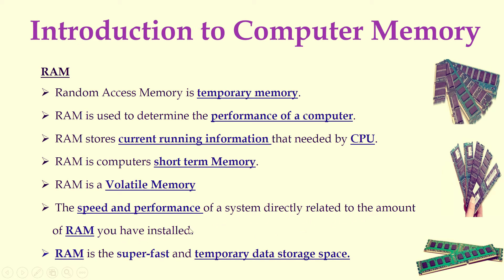The speed and performance of a system is directly related to the amount of RAM installed. If you have higher capacity RAM, the speed will be increased. In general, primary memory has high speed but less capacity. Secondary memory has large capacity but very slow speed, while primary memory has low capacity but very high speed. So RAM is super fast temporary data storage. Since the information inside the RAM keeps on changing, it is called temporary data storage. Here you can see examples of RAMs.